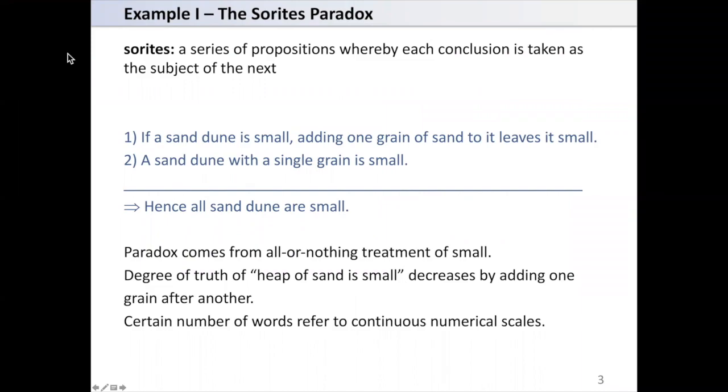Sorites are a series of propositions whereby each conclusion is taken as the subject of the next. Consider the following: if a sand dune is small, adding one grain of sand to it leaves it small. A sand dune with a single grain is small.